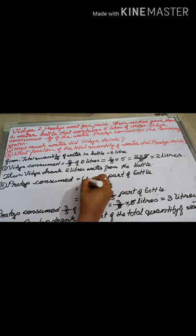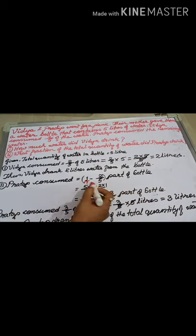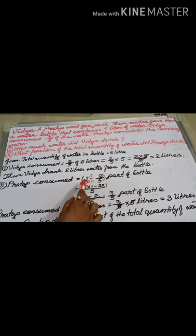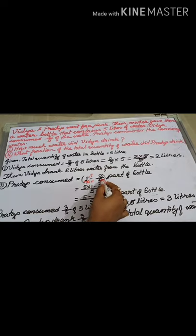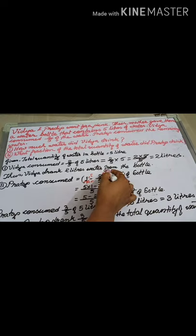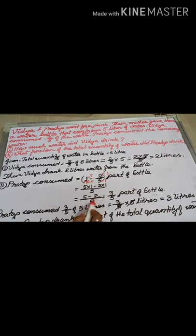You have to make the denominator 5. For this, multiply 1 by 5 over 5. So 5 × 1 = 5 in the denominator, already 5, multiply numerator by 1: 2 × 1 = 2. So 5/5 minus 2/5 equals 3/5. That means Pradeep consumed 3/5 of the bottle.